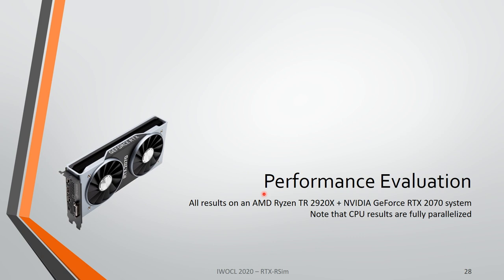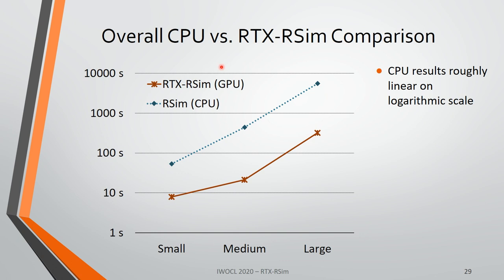Let's look at the performance of these algorithms. All results are captured on a server system with the Ryzen Threadripper 2920X and an NVIDIA GeForce RTX 2070. For exact details on hardware and software configuration, please look at the paper. All CPU results shown are already fully parallelized and scale well on the 12 CPU cores of the system. So we are comparing our GPU results against a parallelized and optimized CPU implementation. We see RTX RSIM on the GPU versus RSim on the CPU in terms of overall simulation time for small, medium, and large sample scenes.